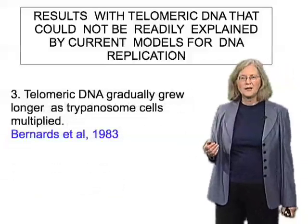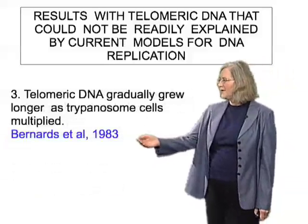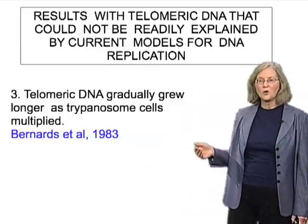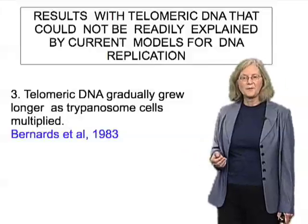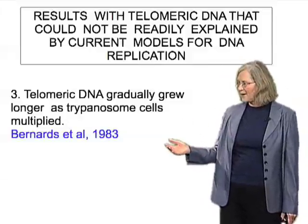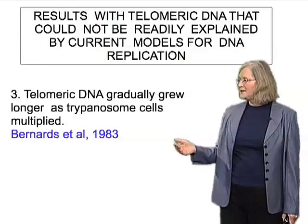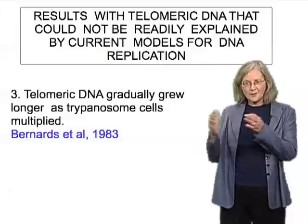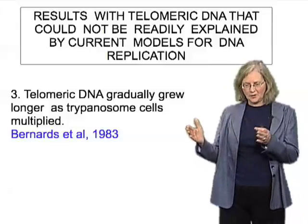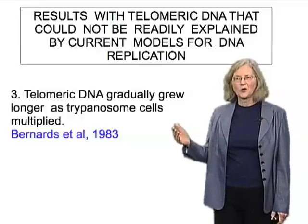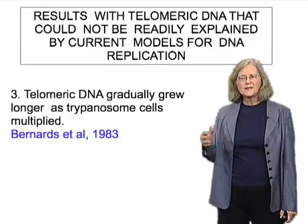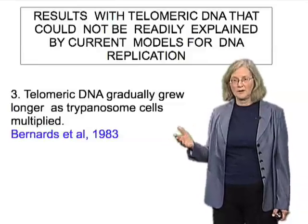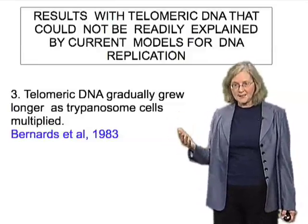A third observation came from cells of the organism that causes sleeping sickness — a single-celled parasitic organism called a trypanosome — being propagated in the laboratory. What was found was that the telomeric DNA restriction fragments — the end fragments of the chromosomes — were gradually getting longer and longer. This didn't look like recombination, and was certainly not expected for normal DNA replication.